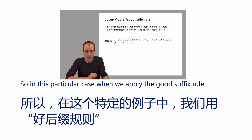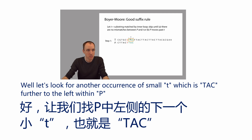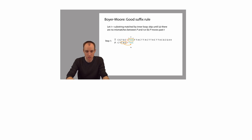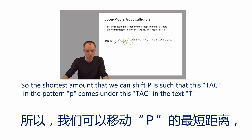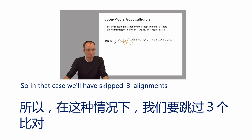In this particular case, when we apply the good suffix rule, how far are we going to skip? We look for another occurrence of small t — which is T-A-C — further to the left within P. You can see one right here. The shortest amount we can shift P is such that this T-A-C in the pattern P comes under this T-A-C in the text T. In that case, we'll have skipped three alignments.